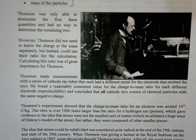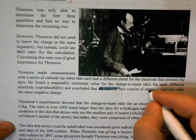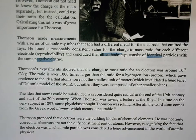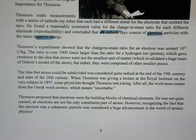Thomson used different metals to produce cathode rays and found that regardless of the metal used, the cathode rays always had a consistent charge-to-mass ratio. He concluded that every cathode ray consisted of identical particles with the same negative charge — electrons. Thomson showed the charge-to-mass ratio for an electron was about 10¹¹ coulombs per kilogram, roughly a thousand times larger than that for a proton. This was the first evidence that atoms were not the smallest unit of matter.